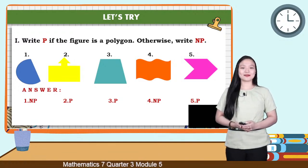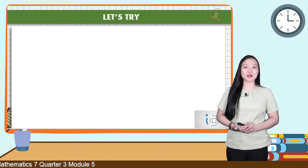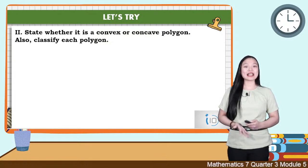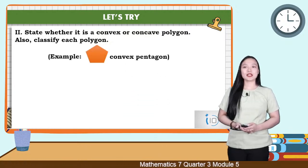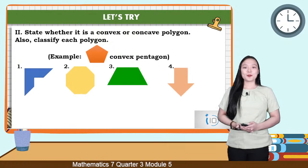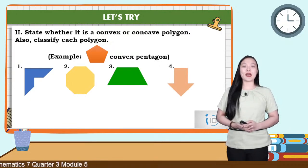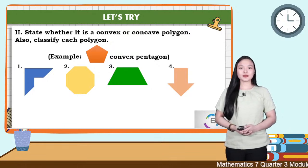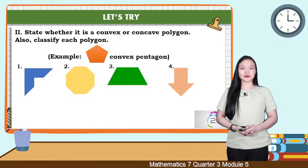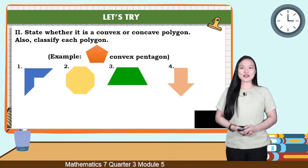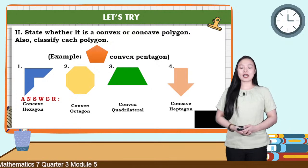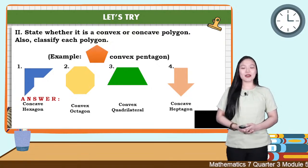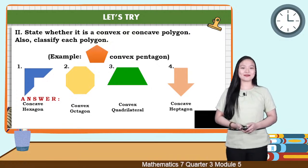Next, we have test two. State whether each figure is a convex or concave polygon and classify each polygon. For example, this is a convex pentagon. There are four figures and you have ten seconds to answer. Time's up. The answers are: number 1 — concave hexagon; number 2 — convex octagon; number 3 — convex quadrilateral; number 4 — concave heptagon. Did you have a perfect score? Very good.